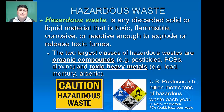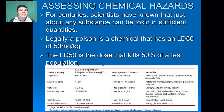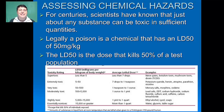For centuries, scientists have known that just about any substance can be considered toxic in sufficient quantities. But legally, a poison is a chemical that has an LD50 of 50 milligrams per kilogram. An LD50 is the dose that's going to kill 50% of a test population.